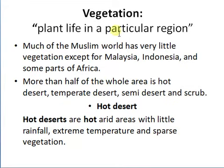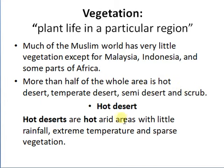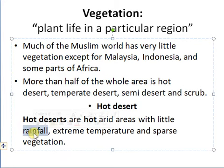Moving on, we have vegetation — plant life in a particular region, and how crops or plant life are affected by climate. Much of the Muslim world has very little vegetation, except for Malaysia, Indonesia and some parts of Africa. This is because more than half of the whole area is hot desert, temperate desert, semi-desert and scrub. Hot deserts are hot arid areas with little rainfall, extreme temperatures and sparse vegetation, so crops cannot grow there.